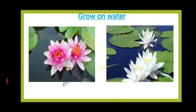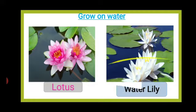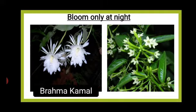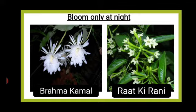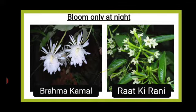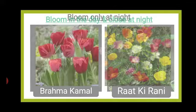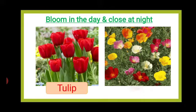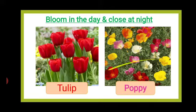Flowers that grow on water: Lotus, Water Lily. Flowers that bloom only at night: Brahma Kamal, Radhki Rani or Night Queen. Flowers that bloom in the day and close at night: Tulip, Poppy. Flowers we can recognize by their scent: Rose, Jasmine.